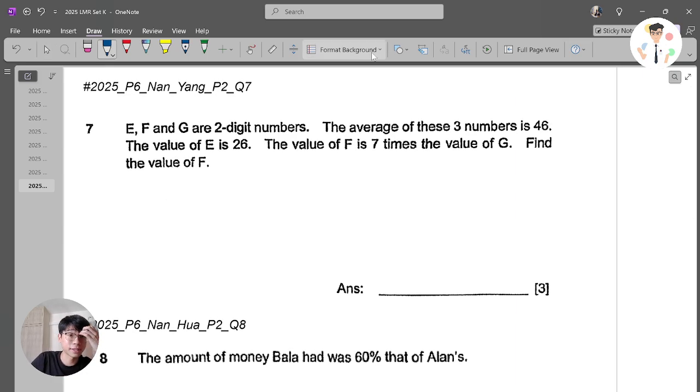This question says that E, F, G are two-digit numbers. Two-digit number means something like 10, 11, 12, 58, 97. The average of these three numbers is 46. So if I know the average is 46, I will multiply by 3. And 46 multiplied by 3 should give you 138. So I know that E plus F plus G is 138.